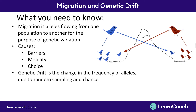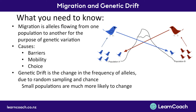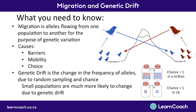Genetic drift is the change in how often alleles get expressed, just due to random sampling and chance. Remember, small populations are much more likely to change — at the very least you need to know that for your exam. A large population is much less likely to shift from half and half to all one allele than a small population. This applies to migration too: if one bird leaves out of five, you've lost 20% of your alleles, whereas one bird leaving out of a thousand means you've lost only 0.1% of your alleles.